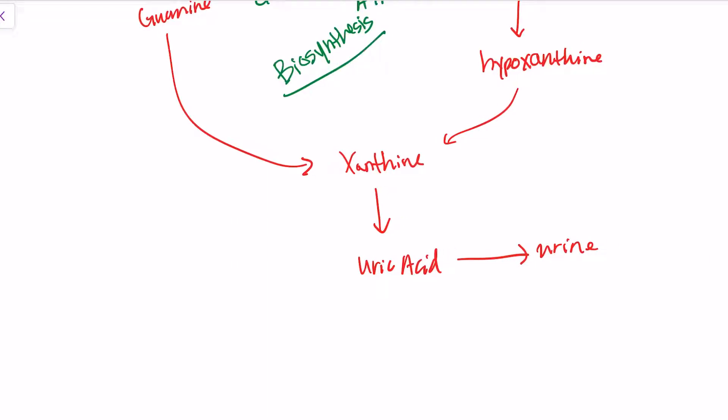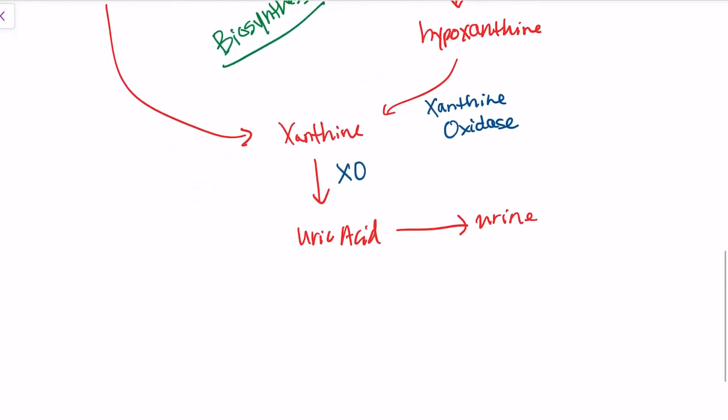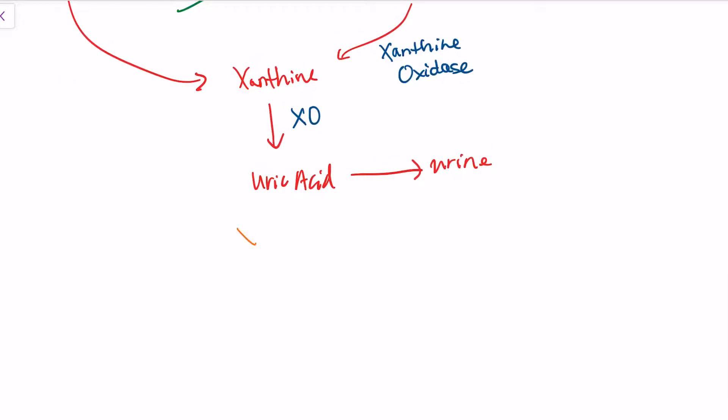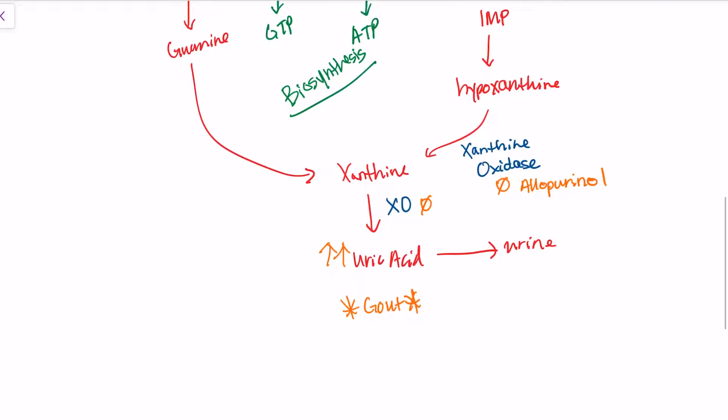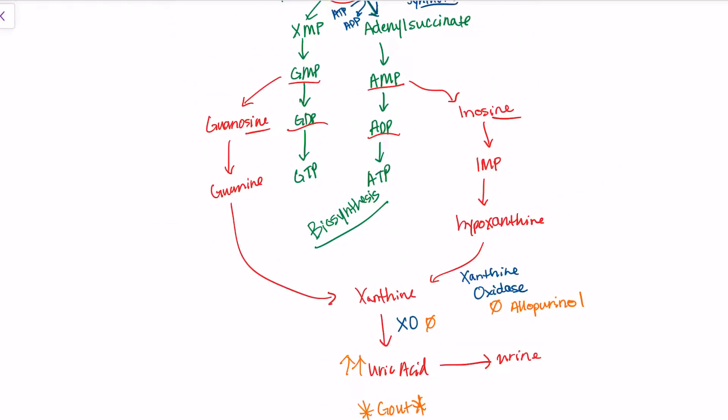Uric acid can be excreted through the urine. One important enzyme located in two places is xanthine oxidase, XO for short. Gout as a clinical correlate happens when we have a buildup of uric acid. A treatment for gout is inhibiting these enzymes with allopurinol. When we inhibit these enzymes, we disallow buildup of uric acid and help treat gout. That is our degradation pathway.